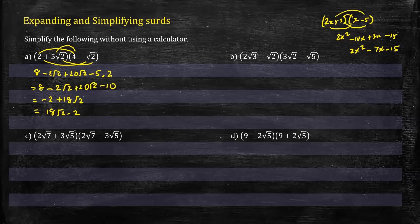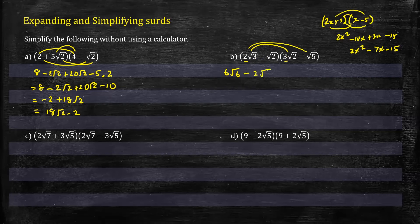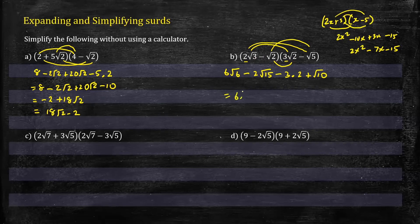In question b we expand in the same way. We have (2√3)(3√2): 2 times 3 = 6, and √3 times √2 = √6, giving 6√6. Then 2√3 times negative √5 gives negative 2√15. Negative √2 times 3√2 gives negative 3 times 2 = negative 6. And negative √2 times negative √5 gives plus √10. So the answer is 6√6 minus 2√15 minus 6 plus √10, with no further simplification possible.